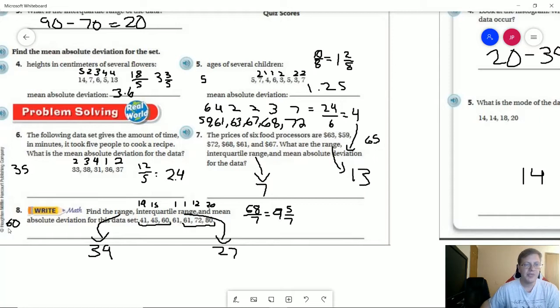For number eight, our mean is going to be 60. And so as we work to find our mean absolute deviation, that's going to give us a value of 60. So 68 divided by seven is going to give us nine and five sevenths, which is not going to translate neatly into a decimal value.